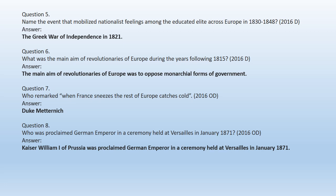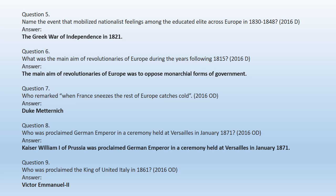Question 8: Who was proclaimed German emperor in a ceremony held at Versailles in January 1871? Question 9: Who was proclaimed the king of United Italy in 1861? Victor Emmanuel II was proclaimed the king of Italy in 1861.